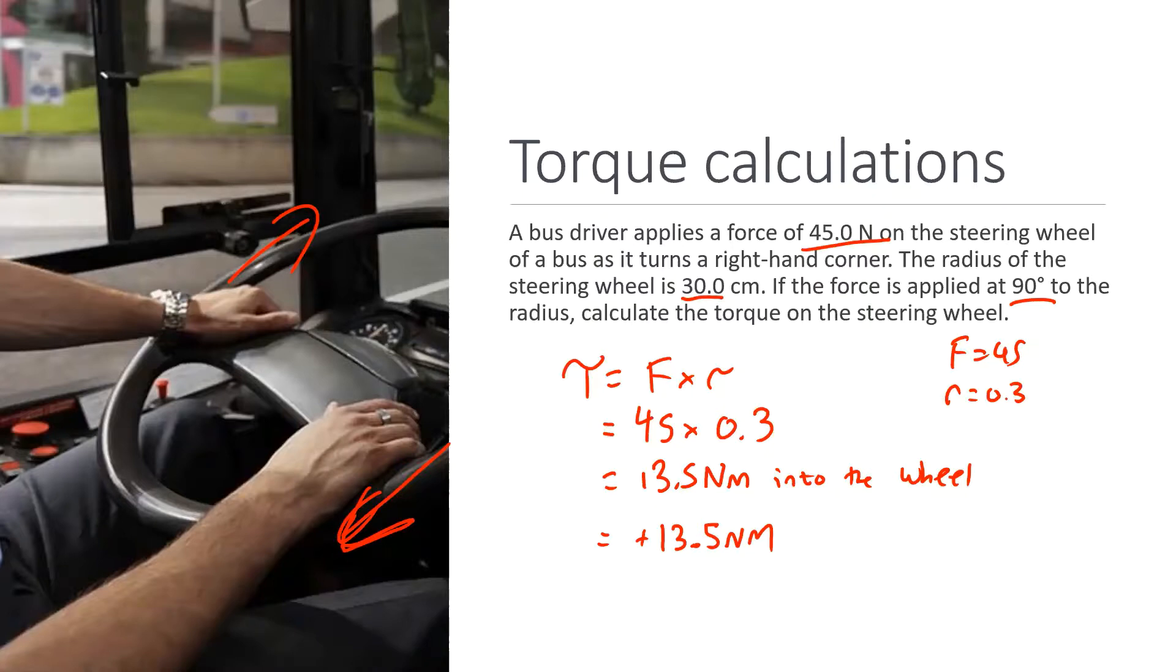We know because it's clockwise, clockwise means into, whereas anti-clockwise would be out of. That's how you do a basic torque calculation. I could have shown you an example where you divide both sides by F or divide both sides by radius to get the force, but I think this is a pretty good example. Are there any questions on how I've done this example?